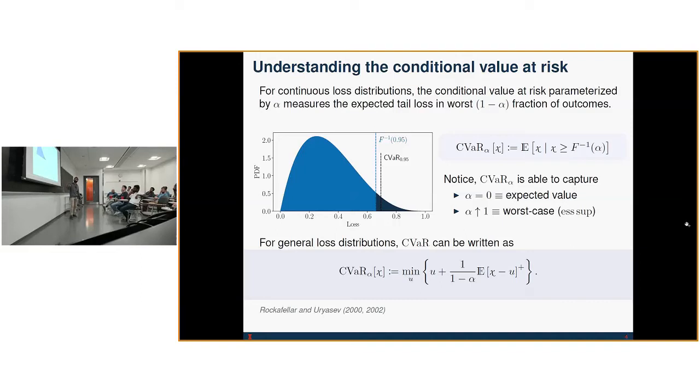by setting alpha to some value, in this case 0.95, this blue area has a cumulative probability of 0.95, and this area has a probability of 0.05. The CVaR measures the expected value of this tail. Notice that alpha gives us a way to select how much of this distribution we care about. By taking alpha to zero, we consider the entire distribution and recover expected value. When we take alpha to one, we only consider the worst case.